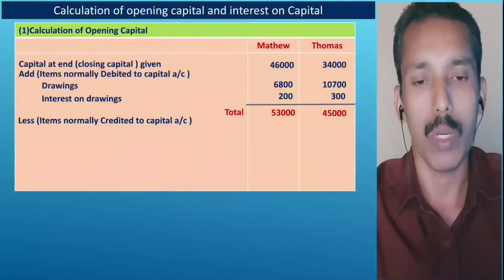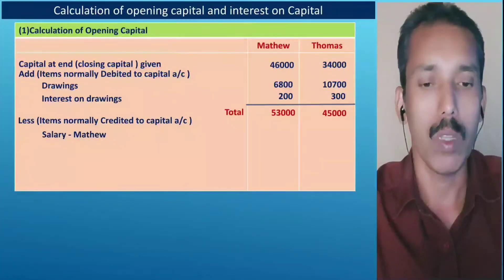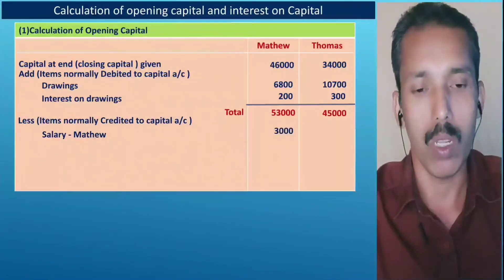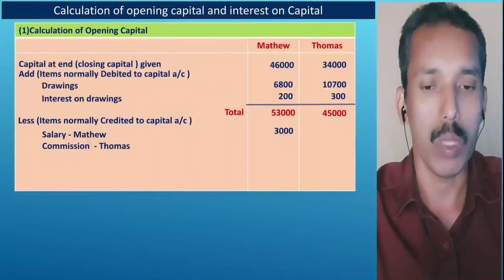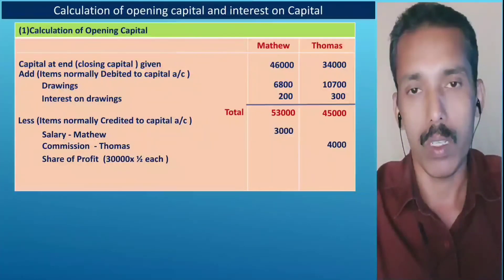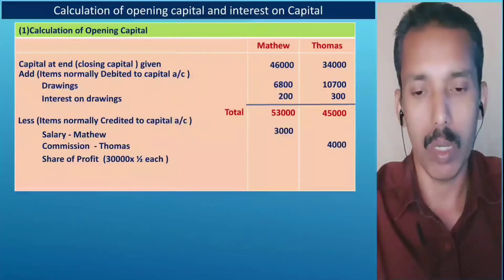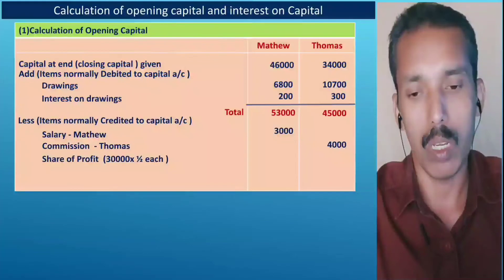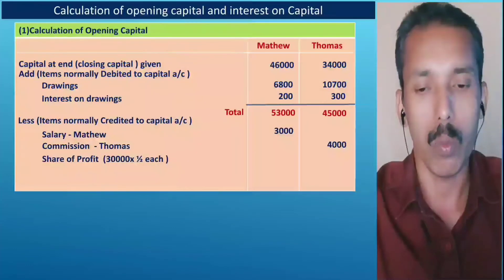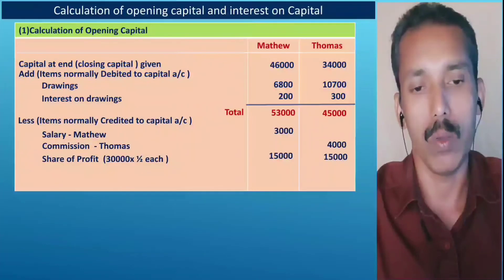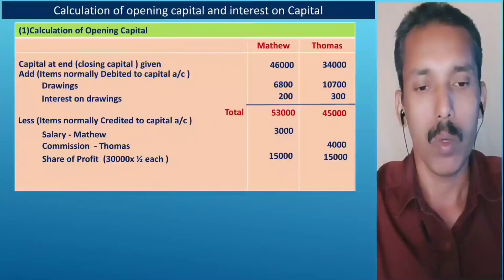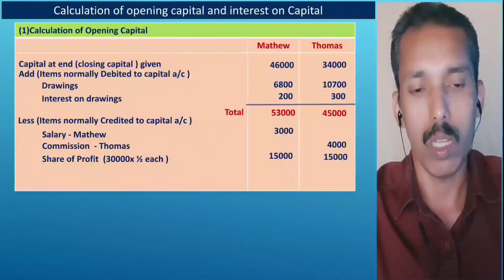Less items normally credited to capital: salary for Matthew is Rs. 3,000 and commission for Thomas is Rs. 4,000. The profit sharing ratio is equal, so the share of profit is divided equally — Rs. 20,000 each, totalling Rs. 40,000 shared between the two partners.